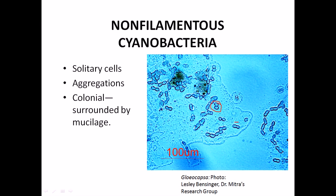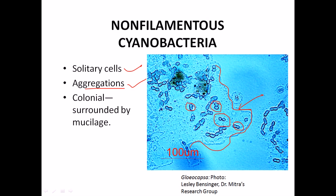We can have filamentous structures without specialized cells and also with specialized cells. The non-filamentous cyanobacteria are scattered, with hardly two cells attached to each other. They are surrounded by a mucilage chemical, which provides extra protection around the cyanobacterial cell membrane.